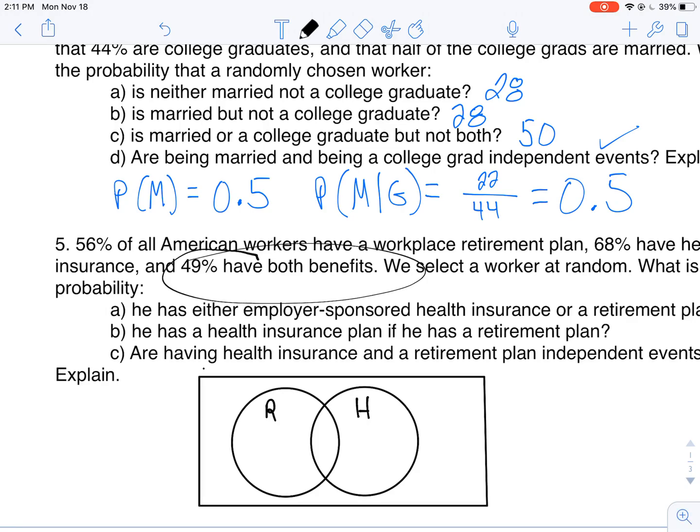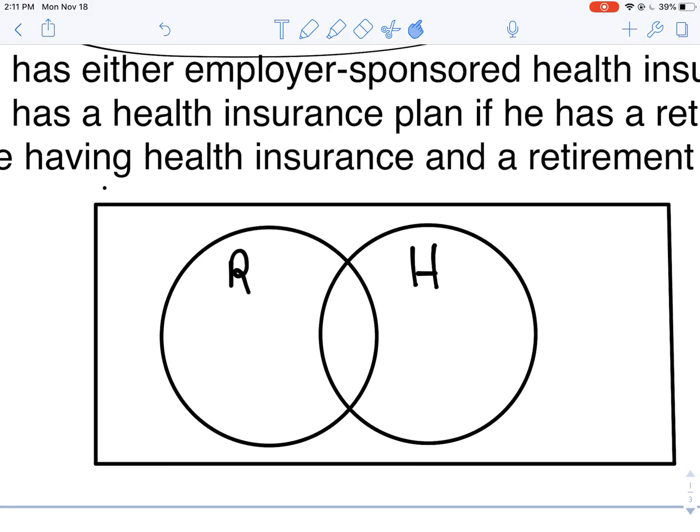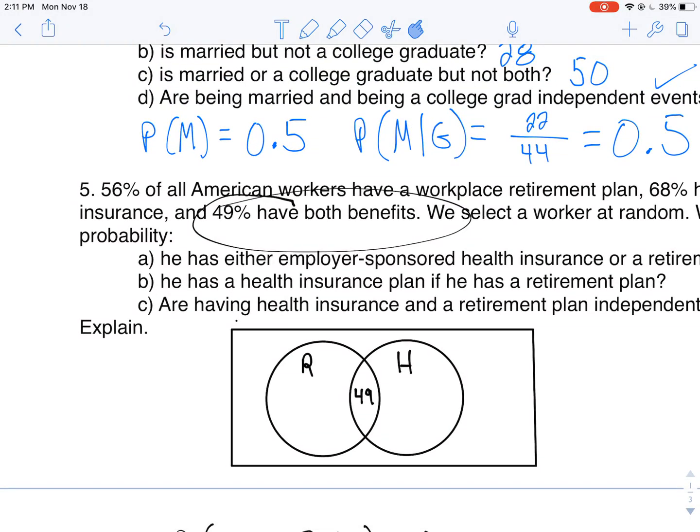Let's see what they tell me. They tell me both. Whenever I am given both, that's always the first thing I go with. I'm gonna fill that in here, 49. So I'm gonna go with 49.